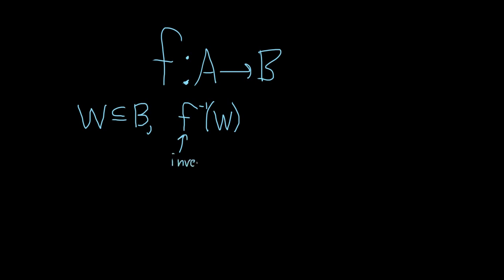This is the inverse image of W under f. It's also called the preimage, and this is probably one of the hardest, if not the hardest set to work with when you first start dealing with functions. So it's the set of all elements in A, so little a in A, such that f of a is in W.